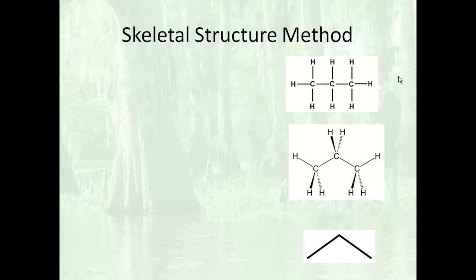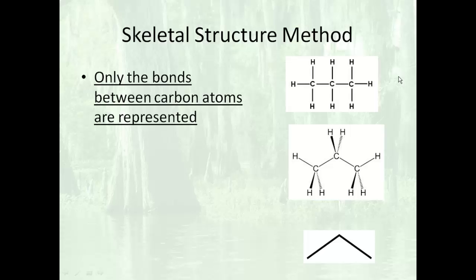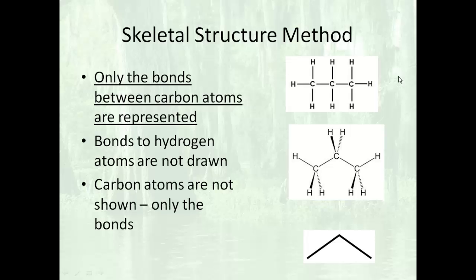In a skeletal structure, only the bonds between the carbon atoms are represented. So only the bonds between carbon atoms are shown when you're talking about the skeletal structure method, which is the bottom one right there. Bonds to hydrogen atoms are not drawn. And by the way, carbon atoms themselves are not drawn. Only the bonds between carbon and carbon.